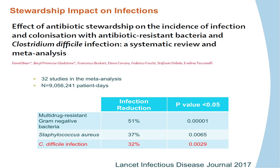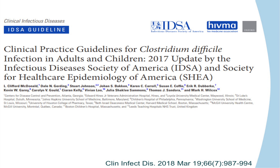Does antimicrobial stewardship help prevent C. diff? A 2017 meta-analysis looked at over 32 studies with over 9 million patient days. Results showed that antimicrobial stewardship reduced resistant gram-negative bacteria by 51%, Staph aureus infections by 37%, and — importantly — C. diff infection by 32%. Antimicrobial stewardship helps reduce C. diff infection, but it's not the only thing. This was published in The Lancet.